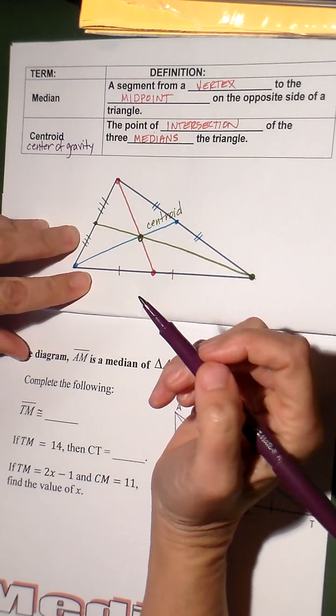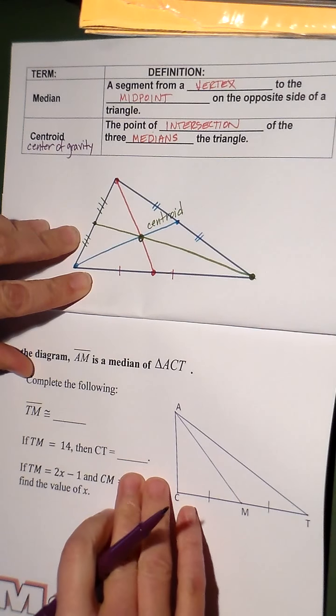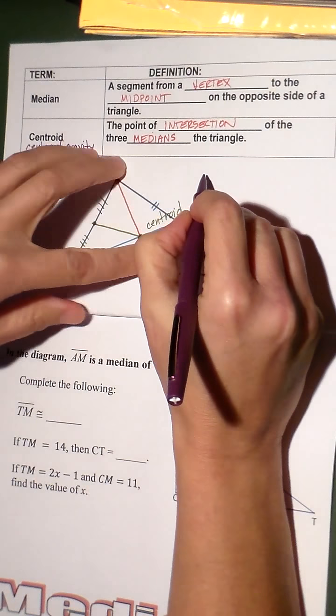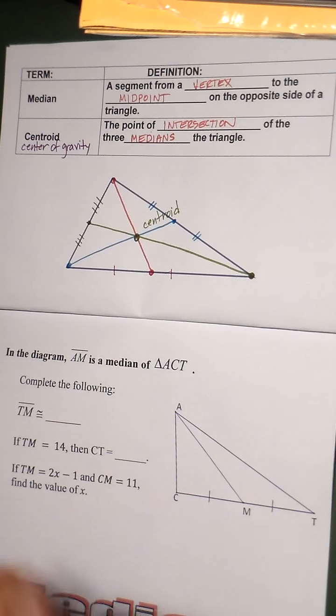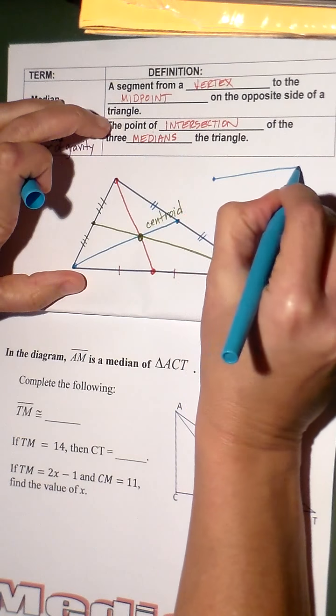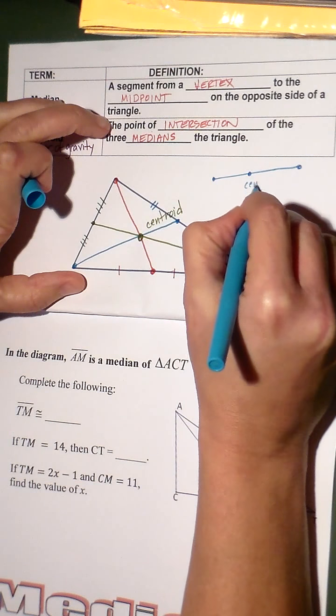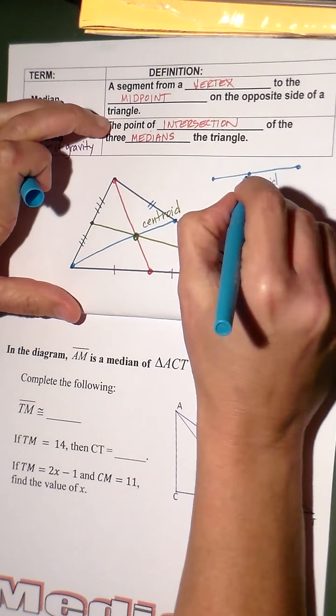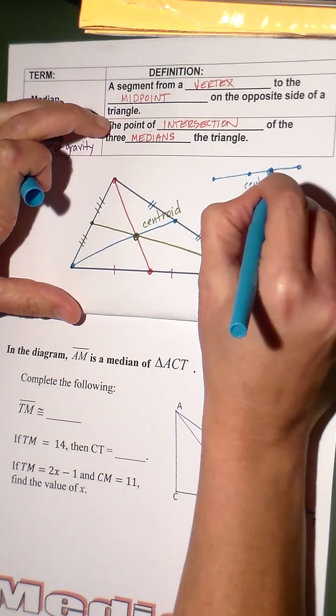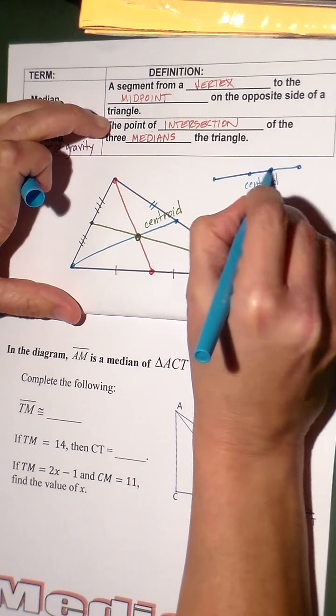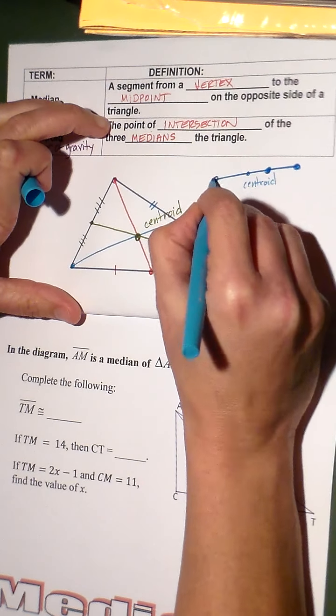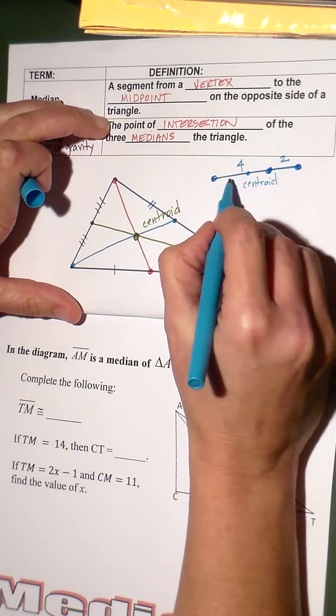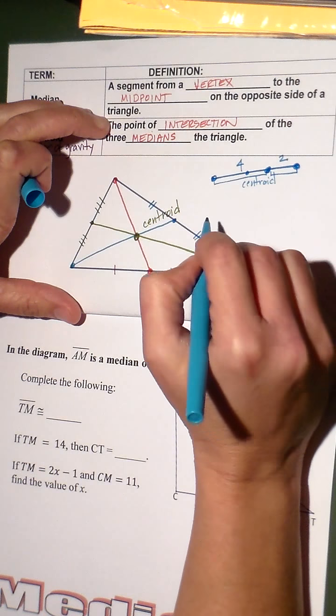So, the centroid has a couple of properties to it. Now, for the centroid, if I were to take, let's look at this blue one here. If I were to take this blue median out, here's my centroid right here. So, if this is four, this is two. So, in the centroid, basically what happens is the bigger segment is twice as big as the small one.